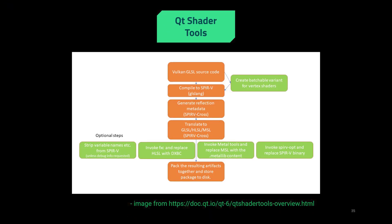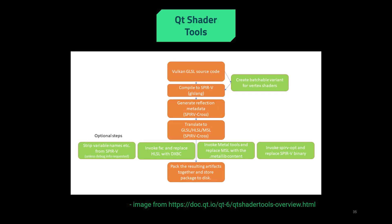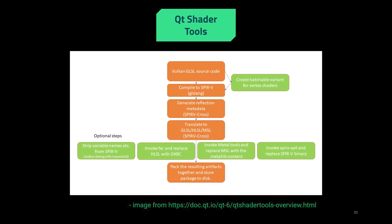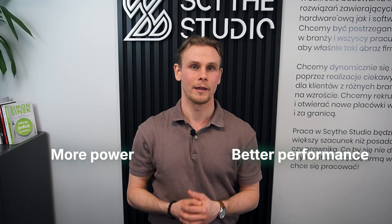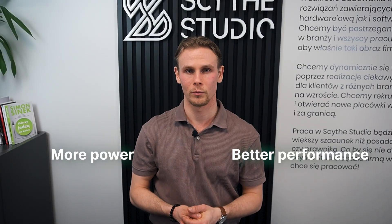Shader support has also leveled up. Qt 6 now supports modern shading languages and improves compiling shaders at runtime for better hardware performance. Plus, Qt Shader Tools makes managing and debugging shaders much easier. So whenever you're working with 3D graphics or custom effects, Qt 6 gives you more power and better performance than ever.